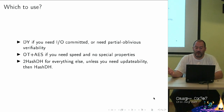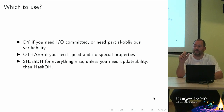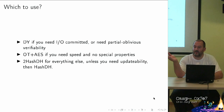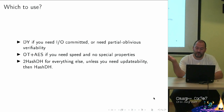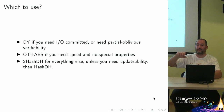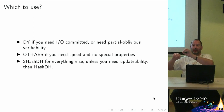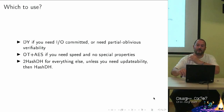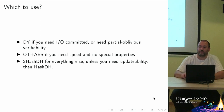Summary of which OPRF to use: use Dodis-Yampolskiy for efficient IO-committed OPRFs, or if you need partial obliviousness with verifiability. For speed, use oblivious transfer plus AES, though it has no special properties. For everything else, use 2-hash-DH — unless you need updatability, which requires hash-DH because hashing destroys the algebraic structure (K-prime / K multiplication) that makes key updates possible.